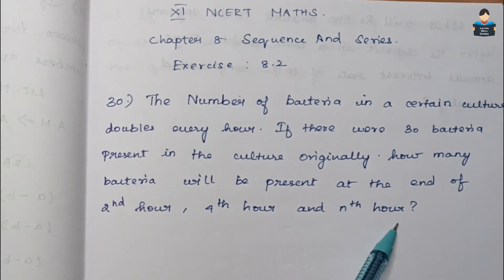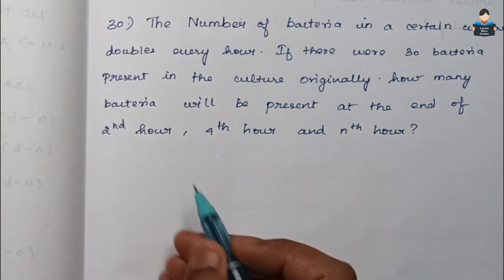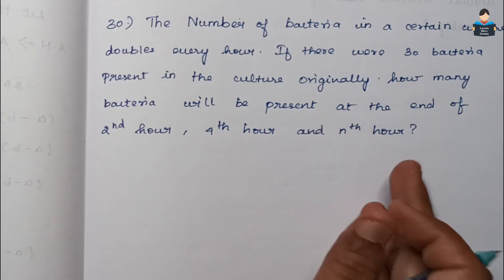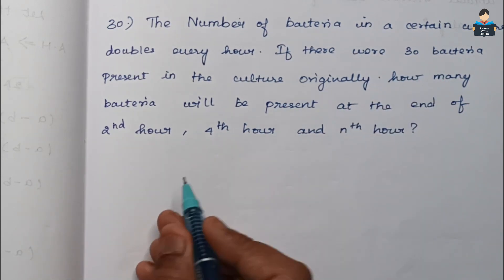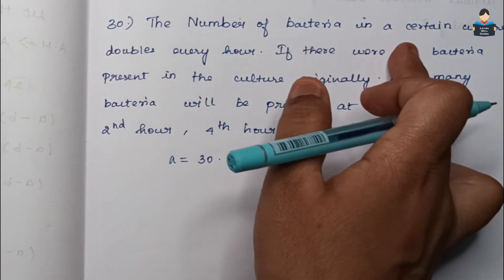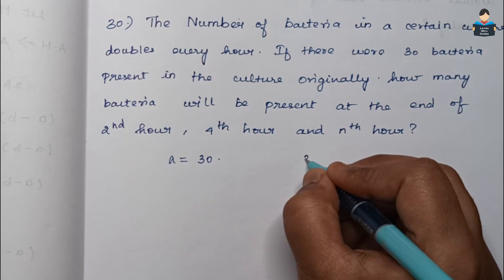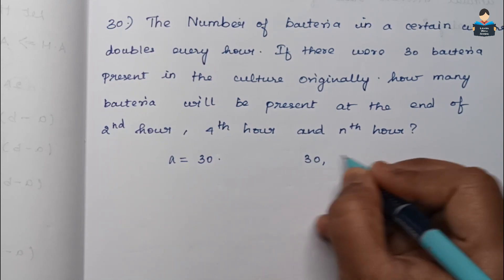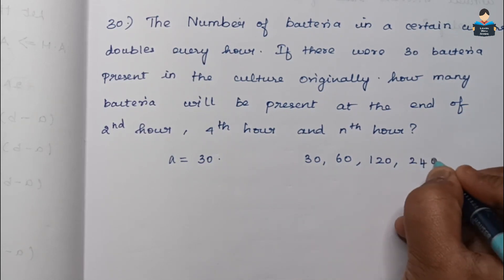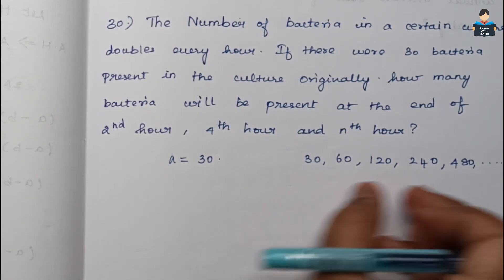So the problem states that the number of bacteria in a culture doubles every hour. Initially 30 bacteria are present. So a equals 30. From the statement, we can form a GP: 30 doubles to 60, then 120, then 240, and 480. Every hour it doubles.